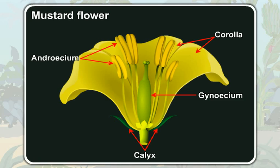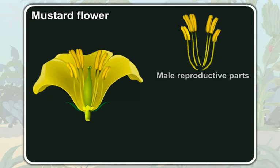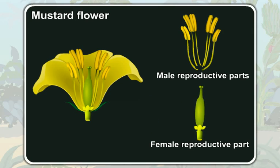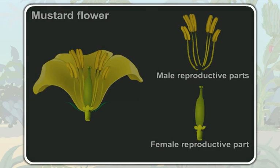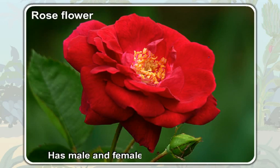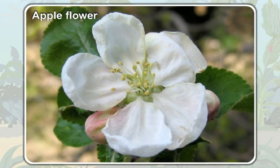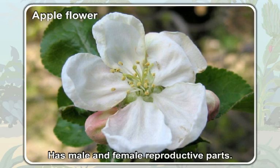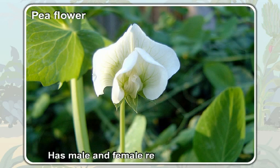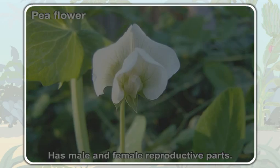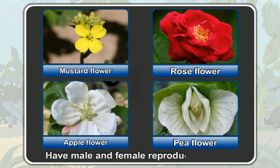Among these four parts, the androecium is the male reproductive part and the gynoecium is the female reproductive part. So, a mustard flower has male and female reproductive parts. A rose flower, an apple flower, and a pea flower also each have male and female reproductive parts.